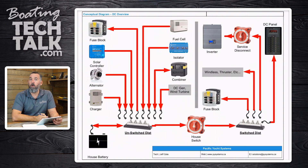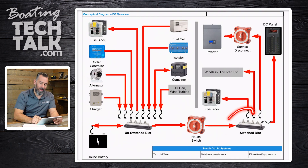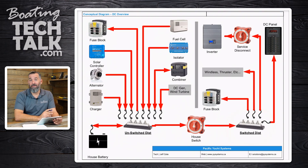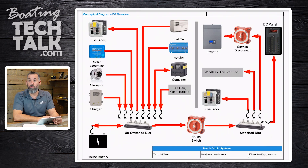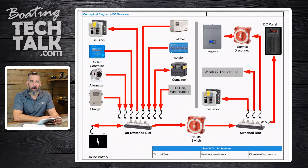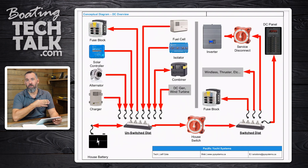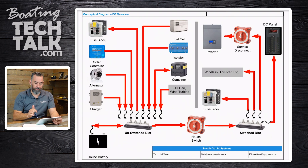Now let's talk about switch distribution. What's on the switch distribution? Well, switch distribution is essentially everything — like everything on your DC panel practically is switched: lights, water pump, macerator pump. Those items don't need a direct connection to your battery. They can go through a switch.